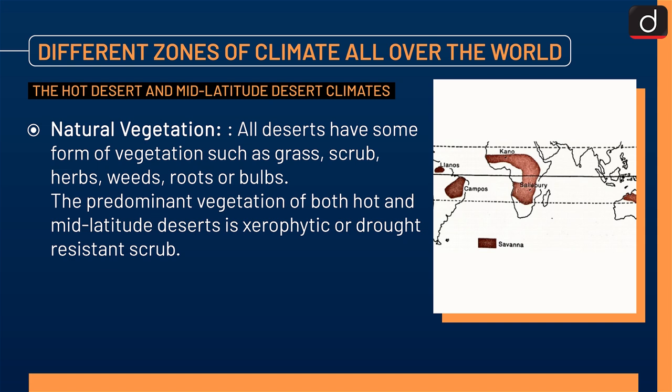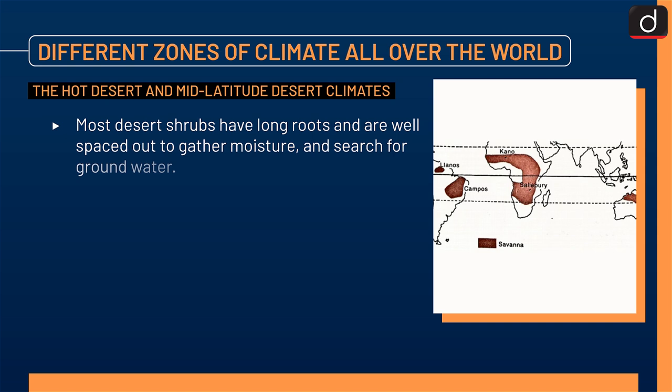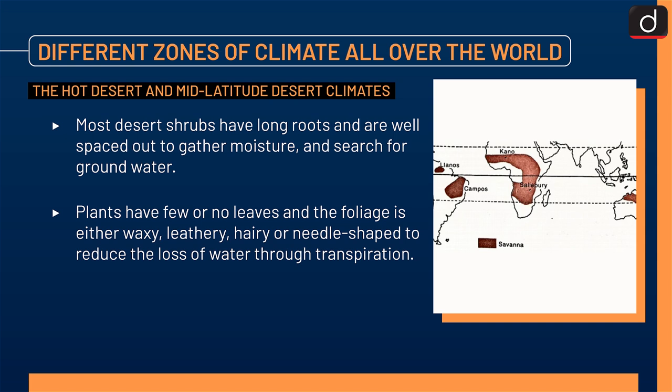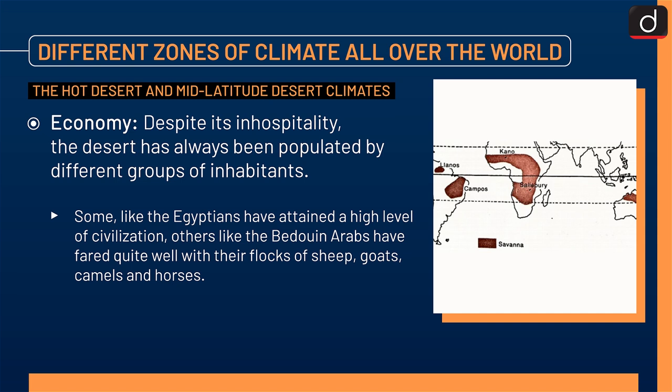Natural vegetation: all deserts have some form of vegetation such as grass, scrub, herbs, weeds, roots or bulbs. The predominant vegetation of both hot and mid-latitude deserts is xerophytic or drought-resistant scrub. Plants that exist in deserts have highly specialized means of adapting themselves to the arid environment. Most desert shrubs have long roots and are well spaced out to gather moisture and search for groundwater. Plants have few or no leaves, and the foliage is either waxy, leathery, hairy or needle-shaped to reduce the loss of water through transpiration. Economy: despite its inhospitality, the desert has always been populated. Some like the Egyptians have attained a high level of civilization. Others like the Bedouin Arabs have fared quite well with their flocks of sheep, goats, camels and horses.